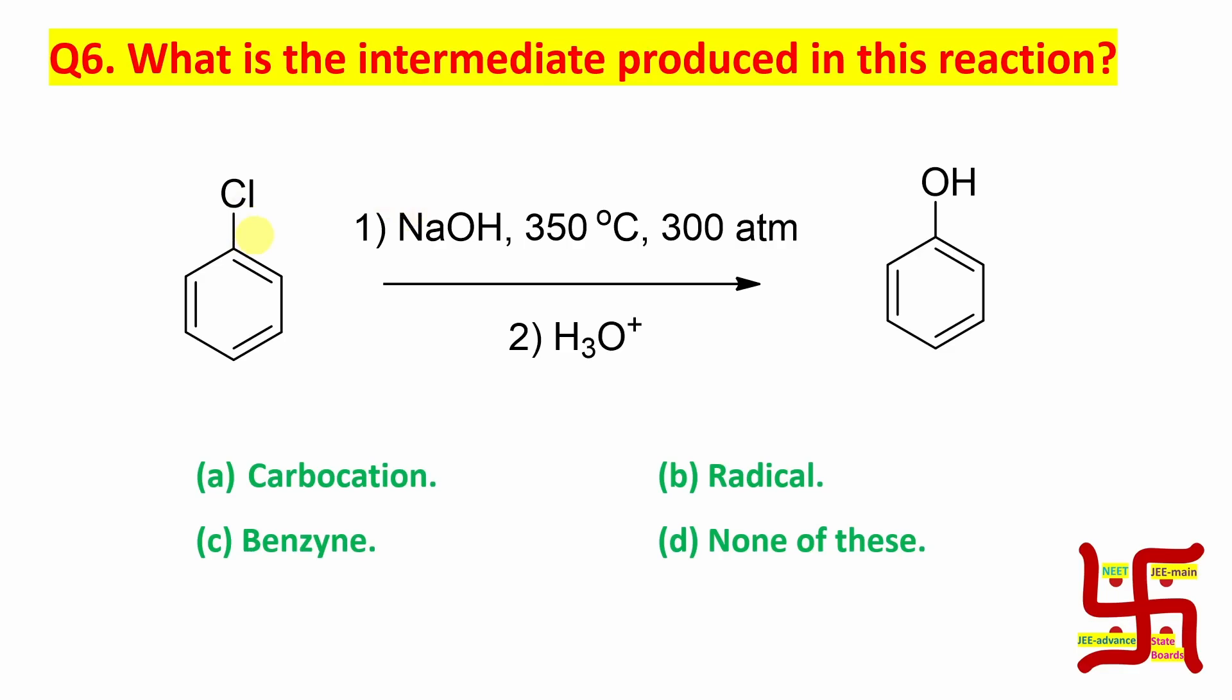So, the question: this chlorobenzene derivative in presence of sodium hydroxide and later on workup resulted in phenol. So what is the intermediate produced in this reaction? Carbocation, radical, benzyne, or none of these. Okay sorry, not carbocation.